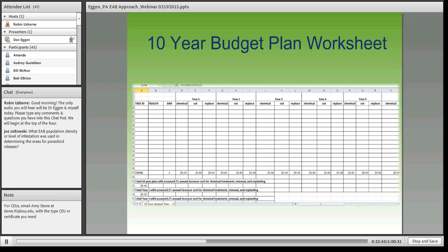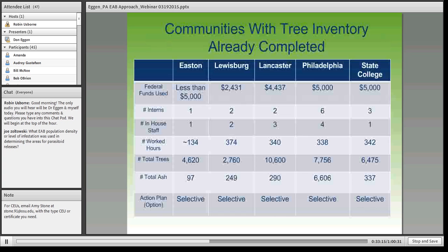Kendra, our EAB intern, produced a table to help a community develop a 10-year budget plan. Each tree is entered with its health, diameter, whether you're going to do chemical control, the cost of removing that tree, and the cost of replacing that tree. There's actually a 2% annual increase built in to account for rising treatment, removal, and replanting costs. Each of those communities had up to $5,000 — some didn't need all of it. The table shows the number of interns and in-house staff used, how many trees were in their inventory, how many ash trees they found, and their action plan, with most picking the selective option.